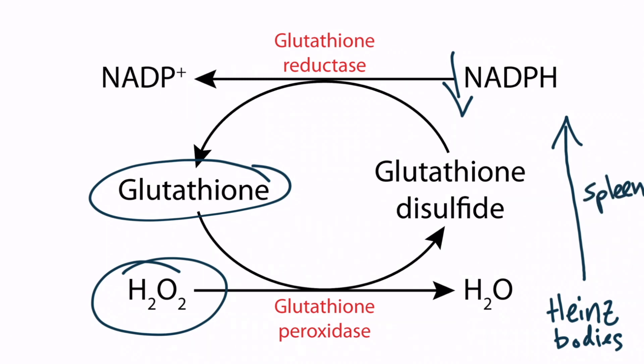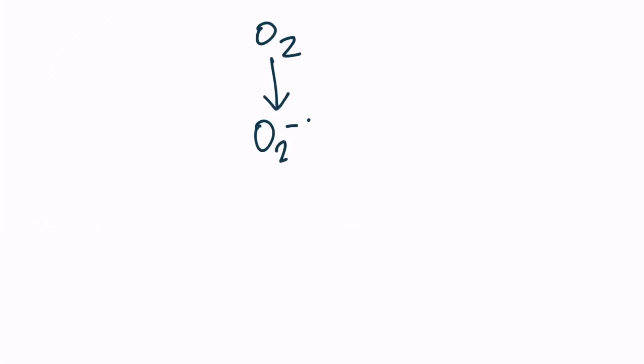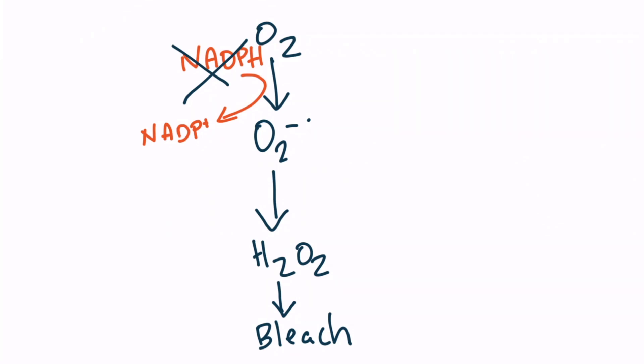As the Heinz bodies go through the spleen, the splenic macrophages damage the red blood cells, resulting in the formation of bite cells. Now let's discuss how NADPH assists phagocytic cells. Phagocytic cells such as neutrophils and monocytes use oxygen to create a superoxide anion, which can then be converted into hydrogen peroxide and then bleach — these substances can be used to kill bacteria. The conversion of oxygen to a superoxide anion is catalyzed by NADPH oxidase and requires NADPH. Thus, patients with a G6PD deficiency will be unable to generate NADPH, and the respiratory burst will be affected, resulting in a weaker immune system.